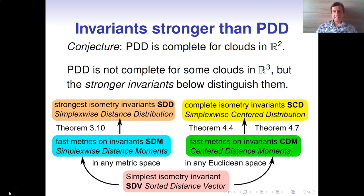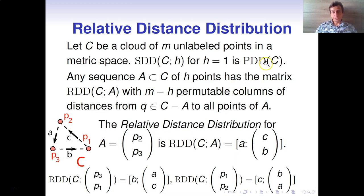Our new work extends point-wise distance distributions to stronger invariants: simplex-wise distance distributions in any metric space and simplex-wise center distributions in any Euclidean space, which are proved to be complete and Lipschitz continuous. Instead of fixing one point in point-wise distance distributions, we can now fix a subset of H ordered points. For example, fixing two points in a triangle example, we construct the relative distance distribution.